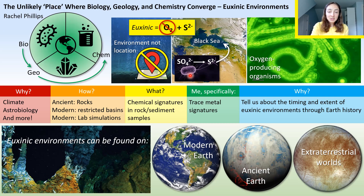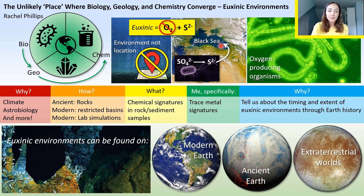Where can we find euxinic environments? Well, these bacteria hate oxygen, so they only live in the deep, dark corners of the ocean today where oxygen is absent, such as the Black Sea, as shown in this picture. However, on early Earth, before oxygen-producing organisms caused oxygen content on Earth to rise, euxinic environments were all the rage.